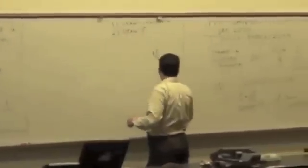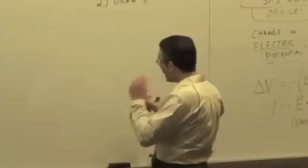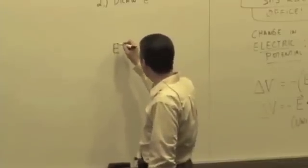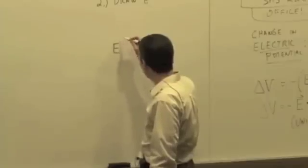We can say that if we know that delta V is the dot product, then we can also say that the electric field, at least the magnitude... well, let's write it this way.